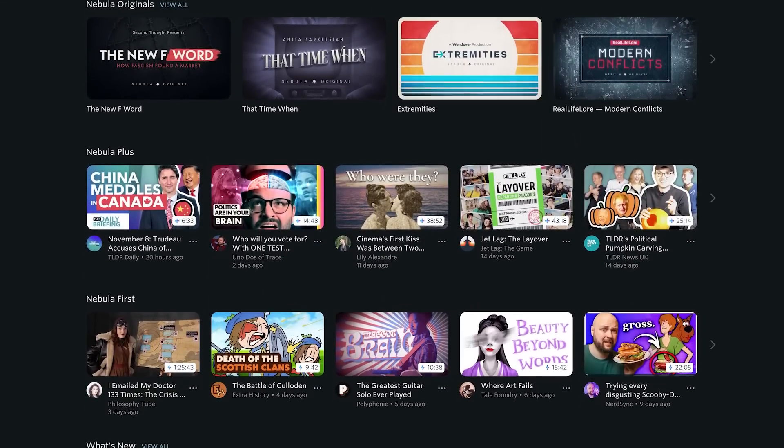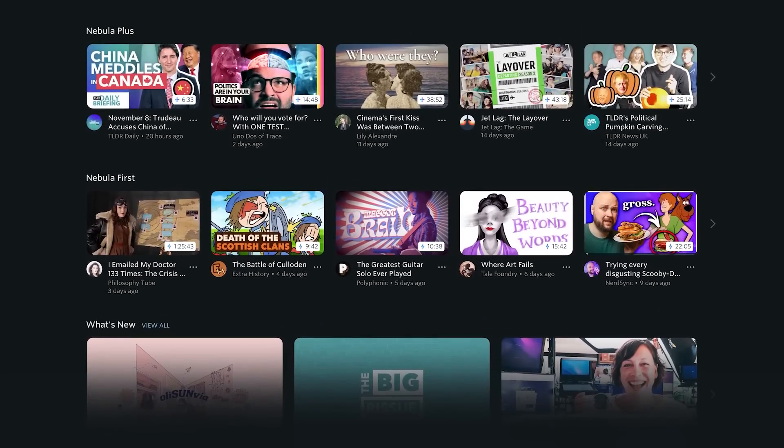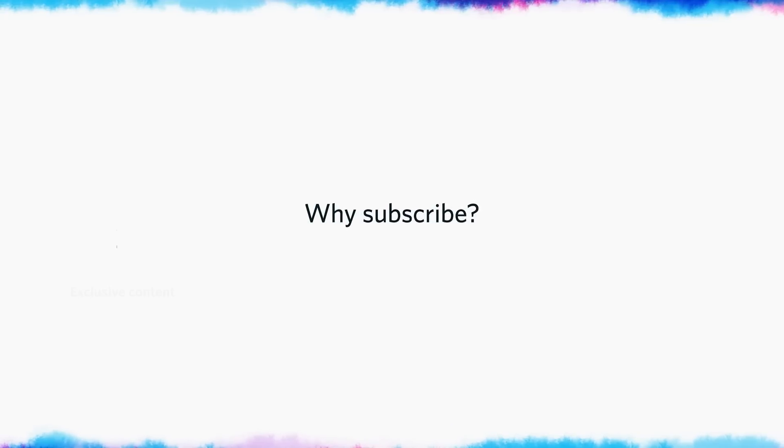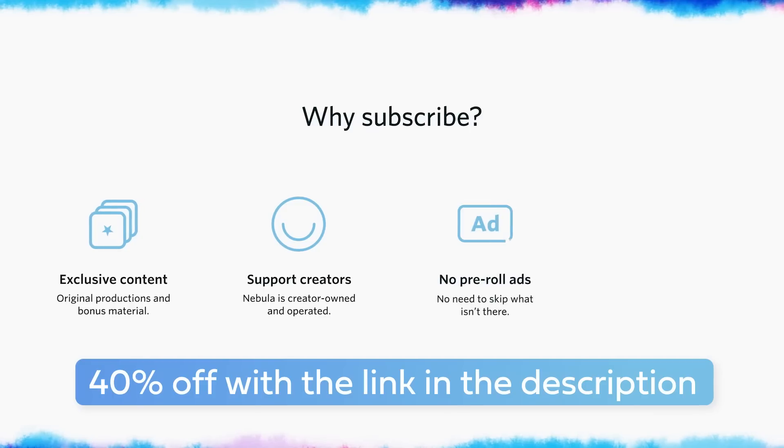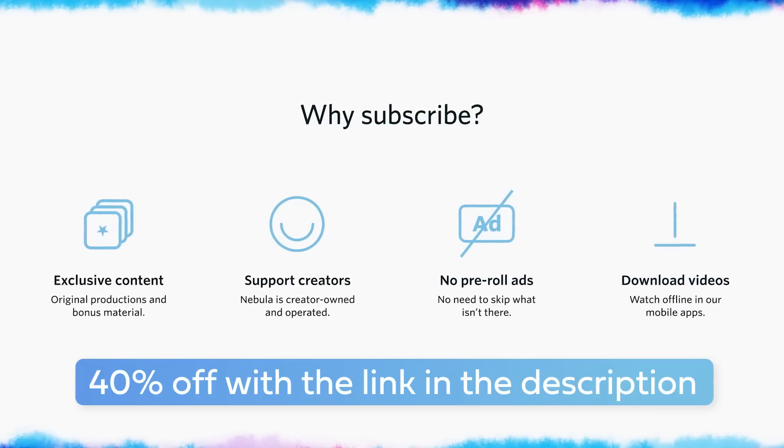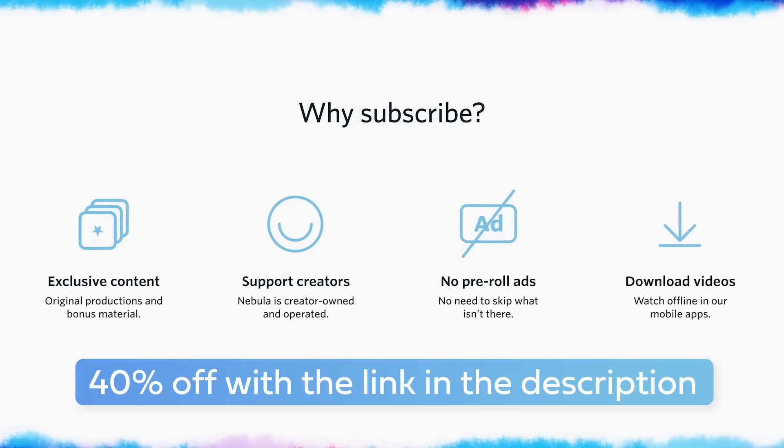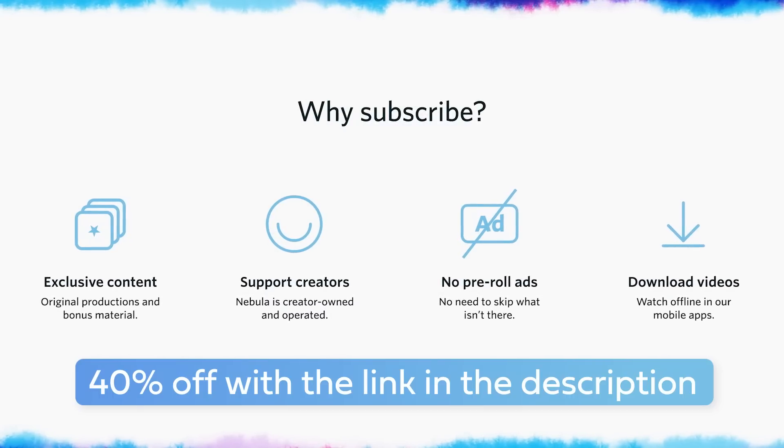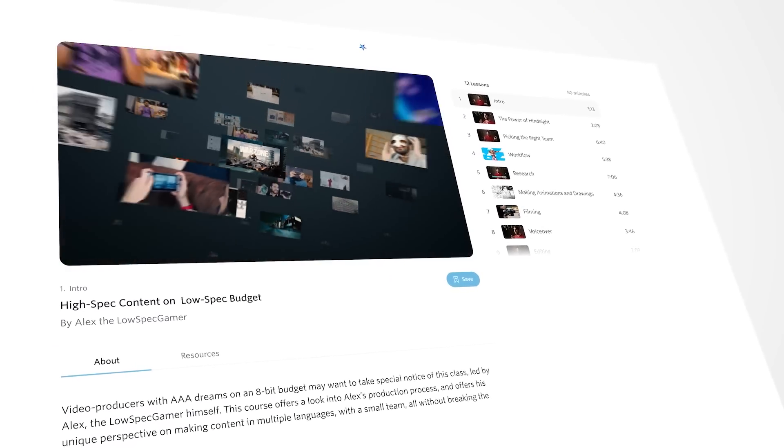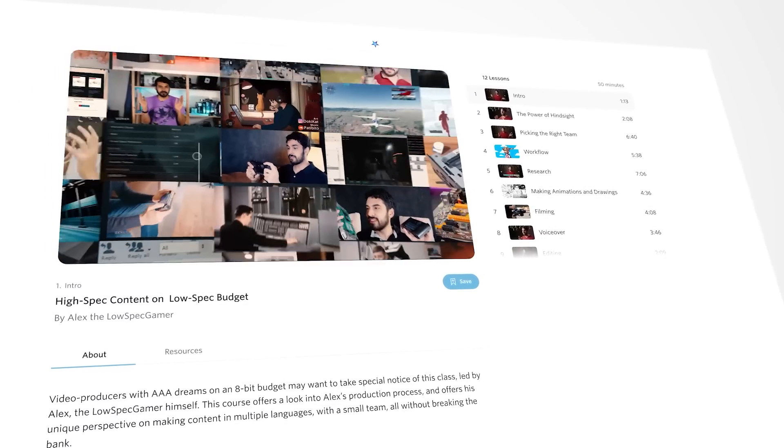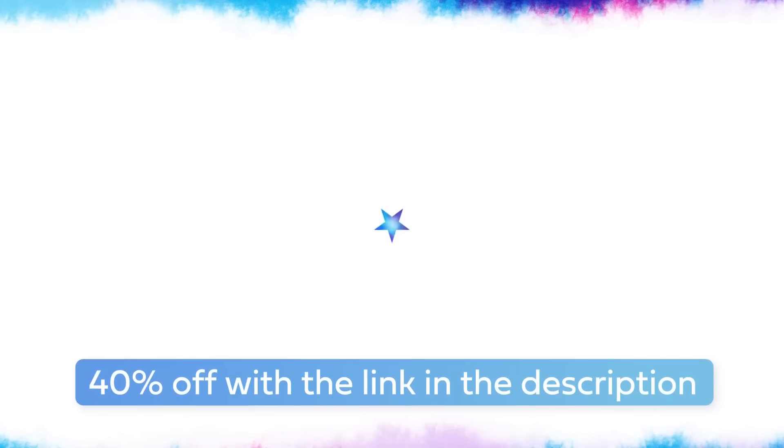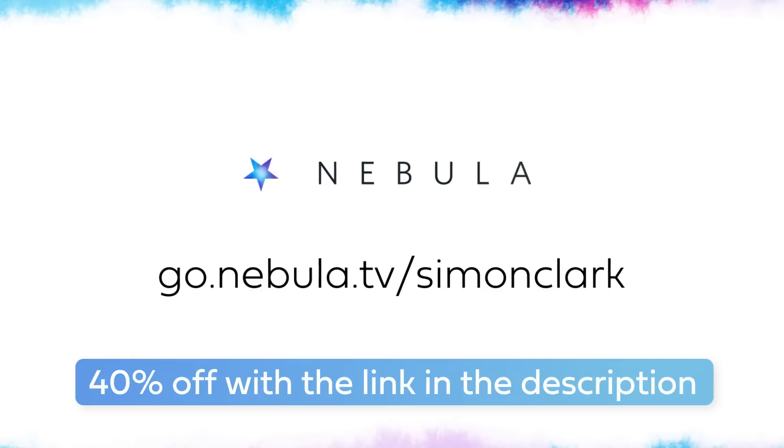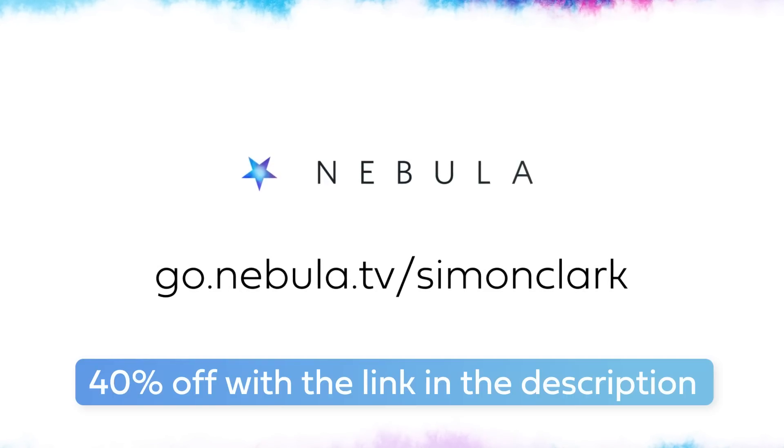Nebula instead operates on a subscription model with your subscription fee divided between the creators you watch. So by signing up and watching videos from me, you directly support this series and further videos from me. If you sign up with my link in the description, you get an amazing 40% discount on a yearly subscription, meaning you can support my videos, stop seeing adverts on videos from your favorite creators, and be introduced to new series and new faces for just $2.50 a month. And for that $2.50 a month, you also get free access to Nebula classes, where Nebula creators show you behind the curtain and how they make videos in in-depth lessons. It may well be the best money you spend this year. And while I would certainly appreciate it if you went to go.nebula.tv slash Simon Clark, I think you are going to appreciate it too.